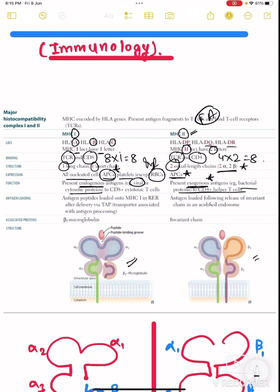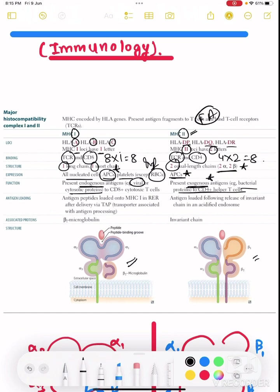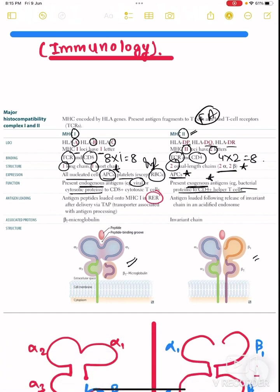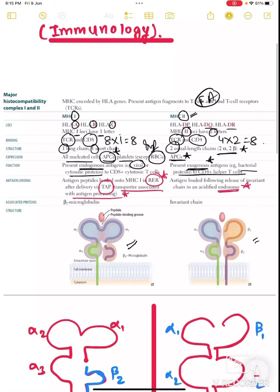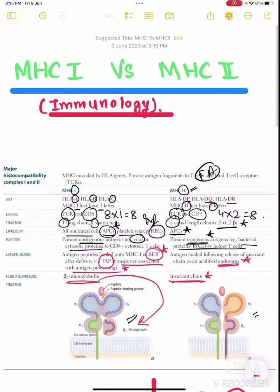Now antigen loading, very important. The antigen loading of MHC class 1 is done inside the rough endoplasmic reticulum, whereas MHC class 2 requires endosome. This particular question has been asked in INI CET once. Also, TAP protein, transporter associated protein, is required for the antigen loading in MHC class 1. Associated protein is beta 2 microglobulin. This protein is nothing but this particular short chain of the MHC class 1, and invariant chain is present as associated protein in MHC class 2. So that's it guys, thank you.